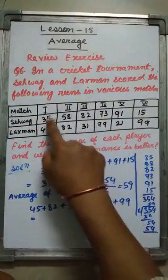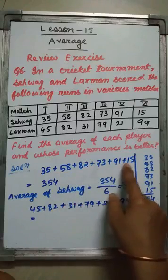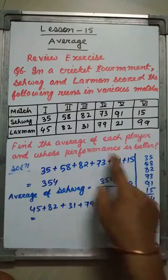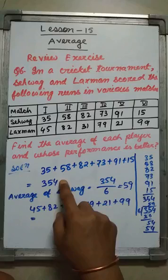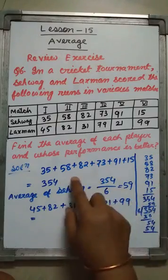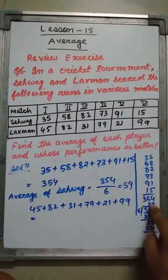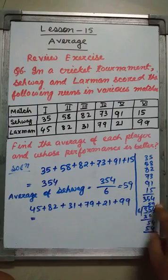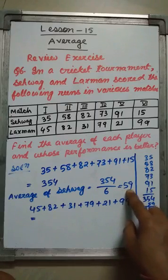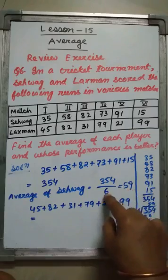I am finding the average of Sehwag first by adding his runs: 35 plus 58 plus 82 plus 73 plus 91 plus 15. How many matches have they played? 6. When I find the sum of the runs of Sehwag, I got 354. The number of matches is 6, so I have to divide 354 by 6. When I divide 354 by 6, I got 59. So the average of Sehwag is 59.